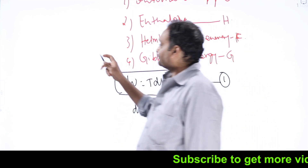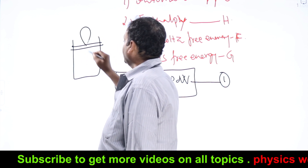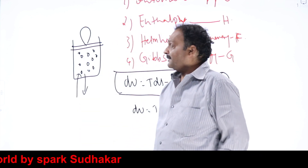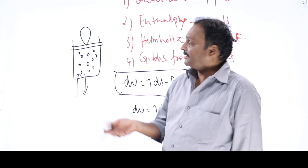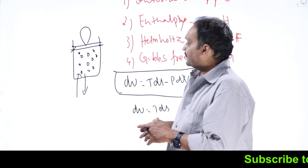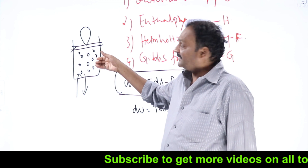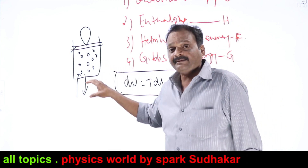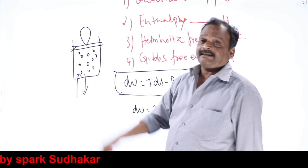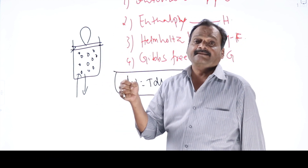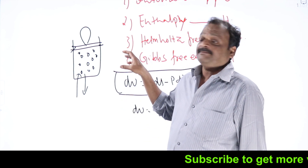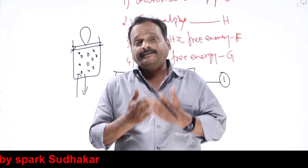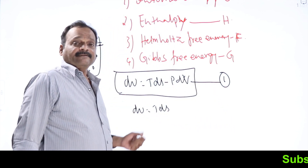But now, if the process is a reversible isochoric process — meaning the piston cannot move up or down and volume remains constant — whatever amount of heat energy I'm giving, internal energy increases by the same amount. Whatever heat energy I'm taking out, internal energy decreases by the same amount. So if I can measure the internal energy of the gas, that gives me the heat content of the system. I can say this system has this much amount of heat energy, provided it is a reversible isochoric process. That's why internal energy is known as the heat content of the system in a reversible isochoric process.